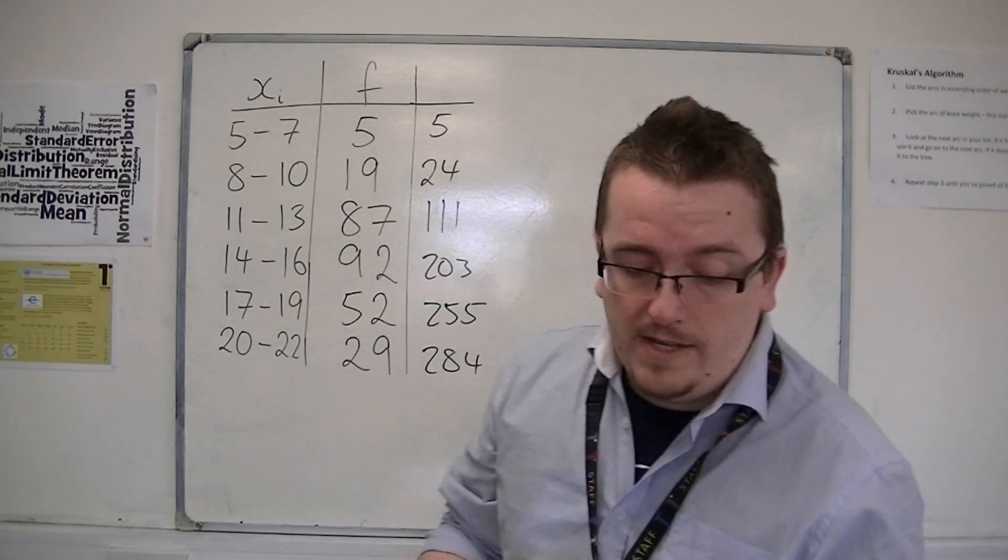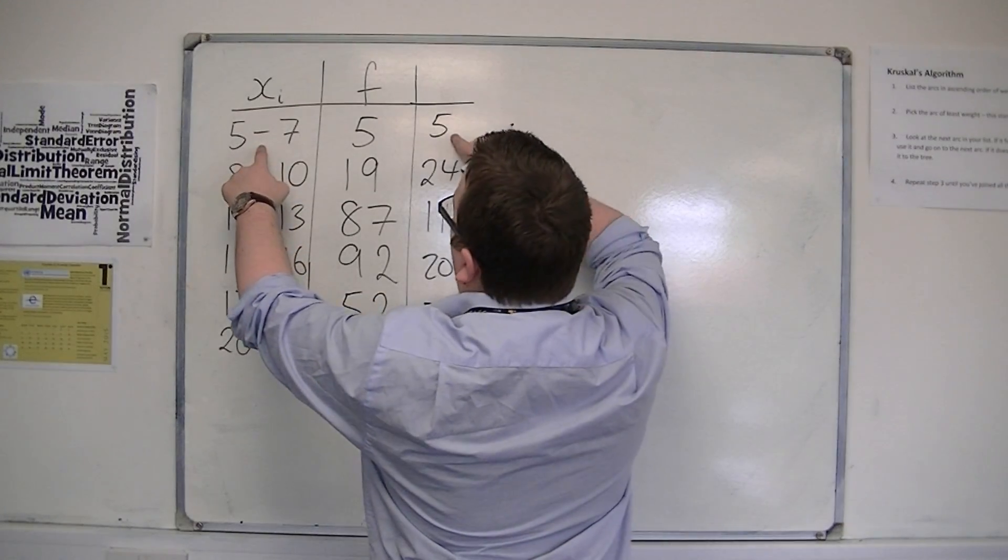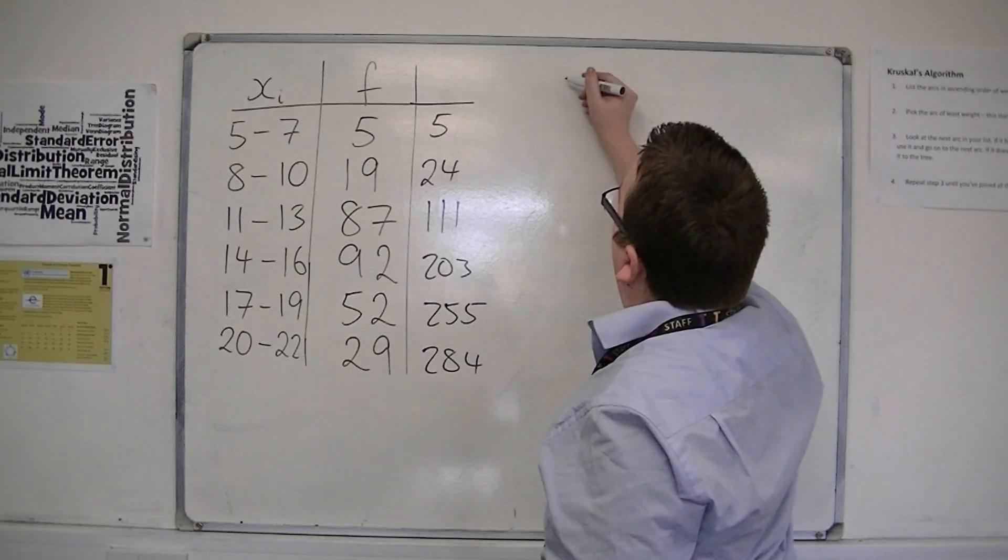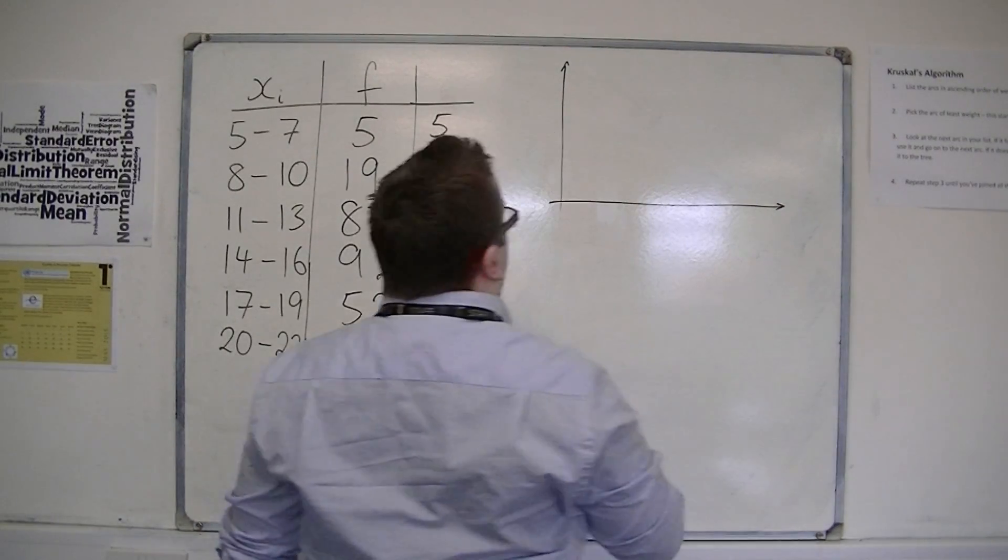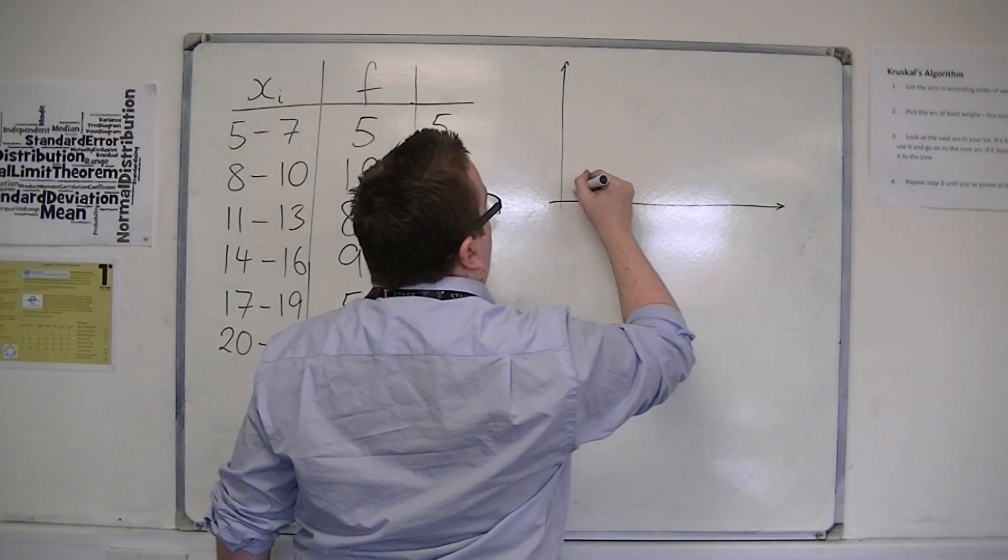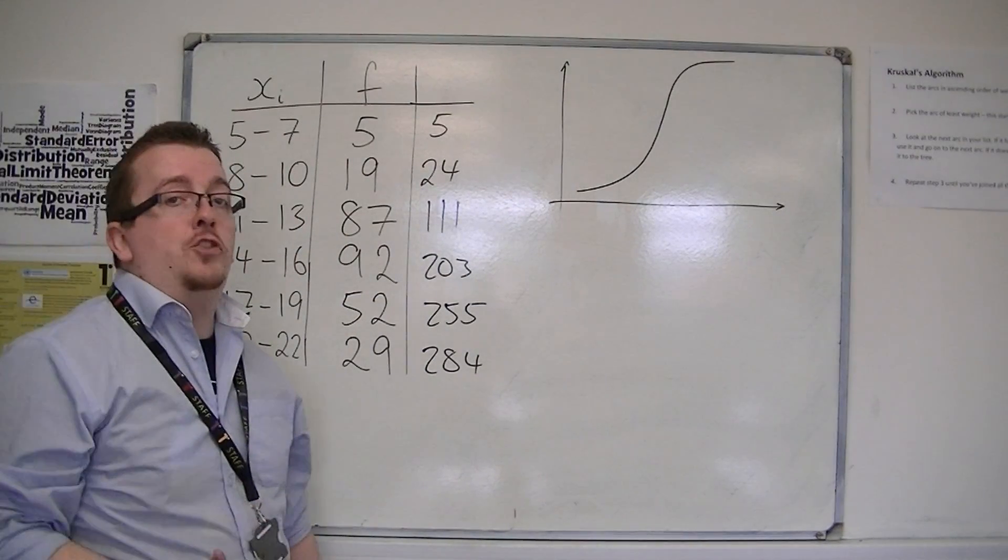And what you would then do is you would plot the middle groups, so 6 and 5, 9, 24, 12, 111, on an xy grid. And the type of shape that you would get would look something like this. It's like an elongated S shape.